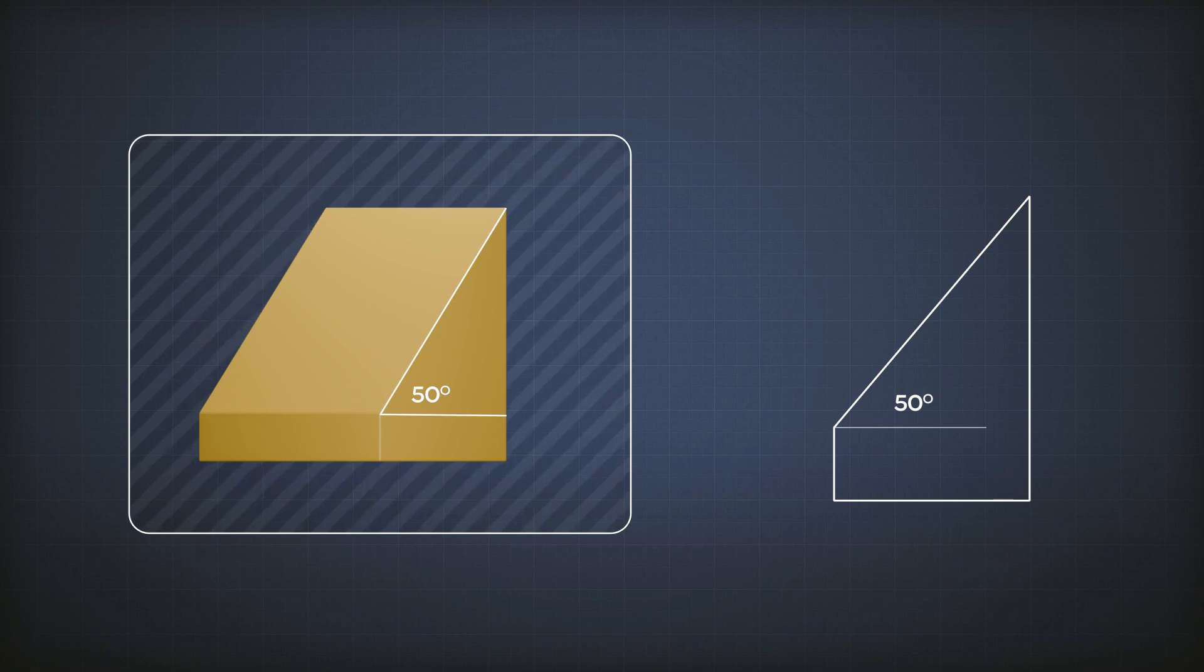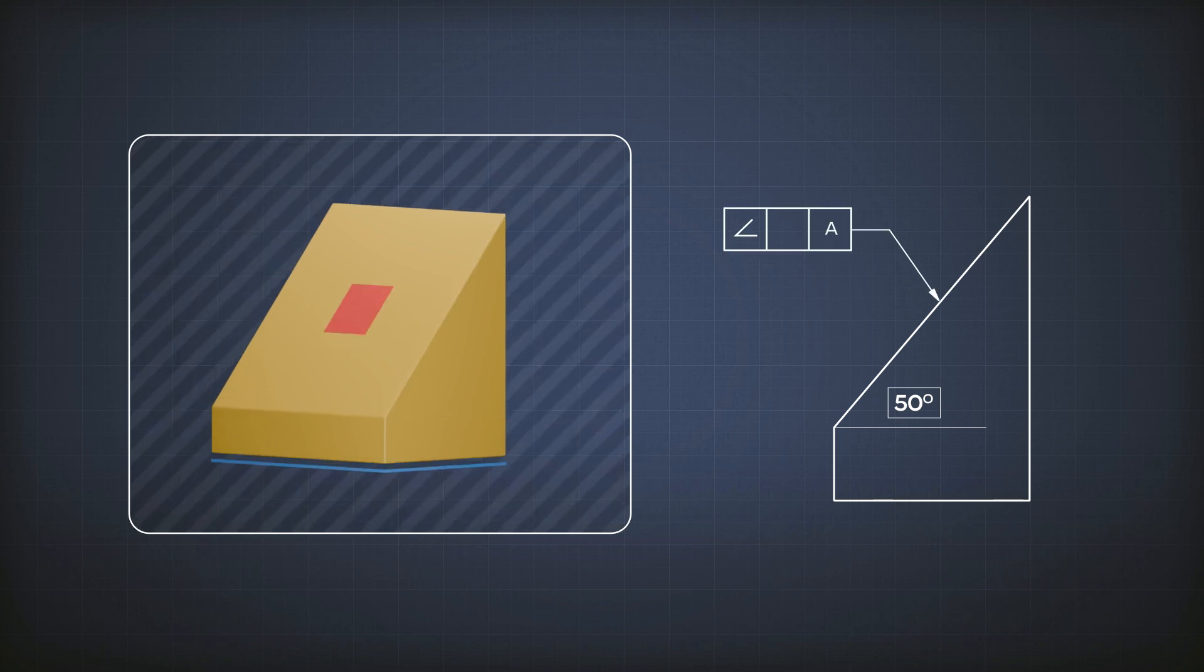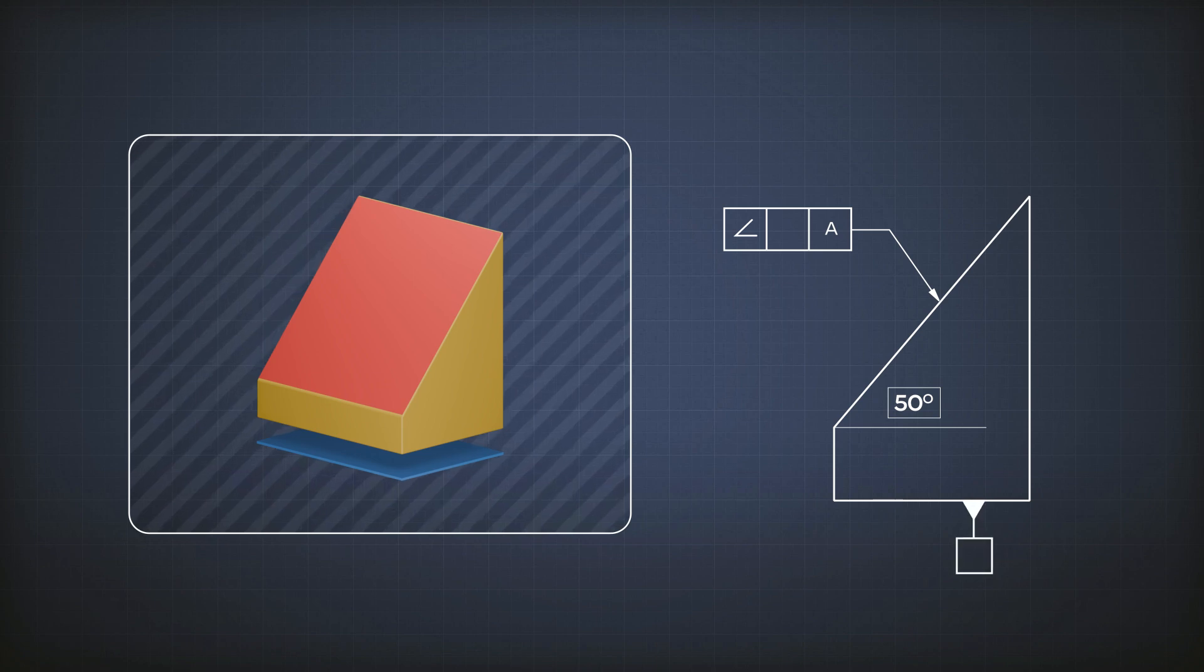But I want to use GD&T. So in this case I have to put 50 degrees in a box, which means it's now a basic dimension, a theoretically ideal dimension. And then I add the angularity tolerance to the element. I want my surface and the surface here to be with an angle. So I put the sign for the angularity and here, the datum on the last block. And I put the value of the tolerance here, let's say 0.1.